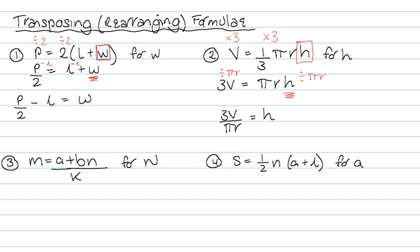The next one, M equals a plus bN over K. That should be solving for little n. So if we look at that, that's what we need to get on its own. Now this is one big group because it's all being divided by K. So the first thing I need to get rid of is that K. So I'm going to multiply both sides by K.